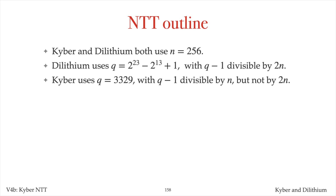However, the Kyber prime q equals 3329 is divisible by n, but not by 2n. Because of this, the Dilithium NTT has to be modified to work for the Kyber polynomial ring. The modification, as we'll see, is essentially to prune one level from the Dilithium NTT tree. I'll present the main ideas of the Kyber NTT, but I'll skip some details since the Kyber NTT is quite similar to the Dilithium NTT.